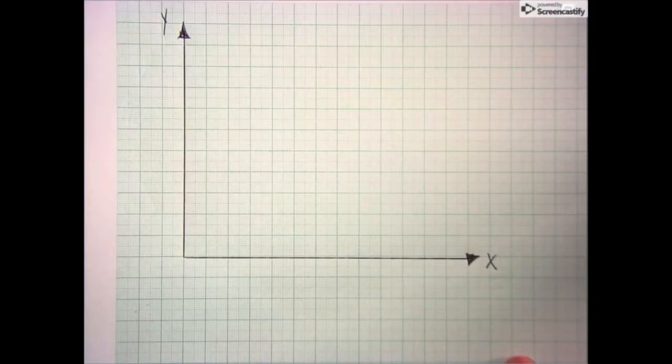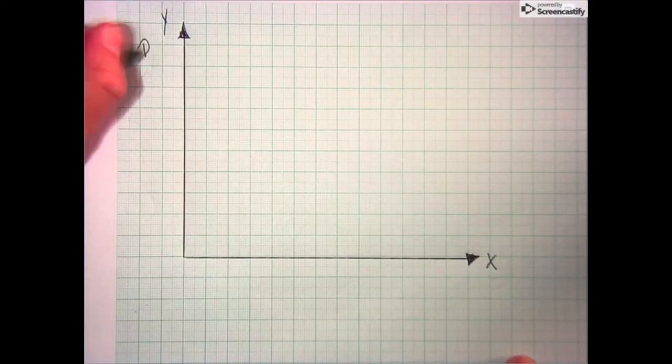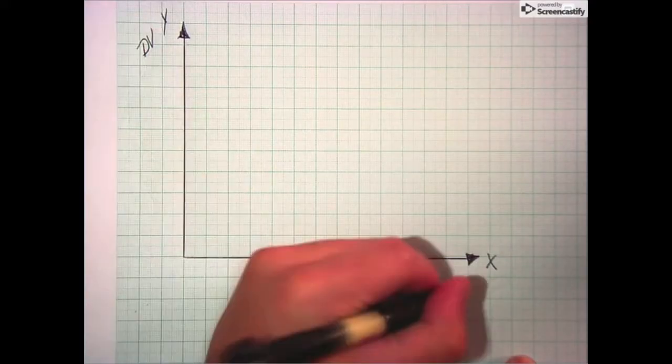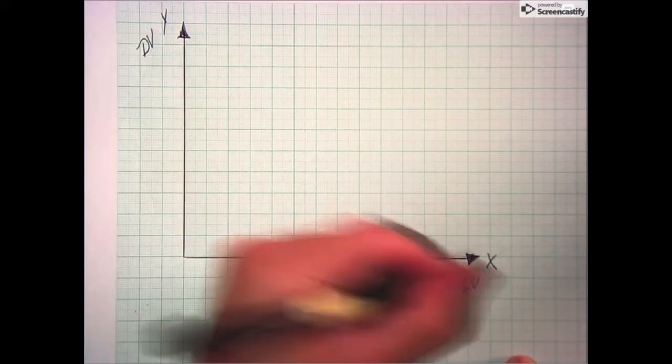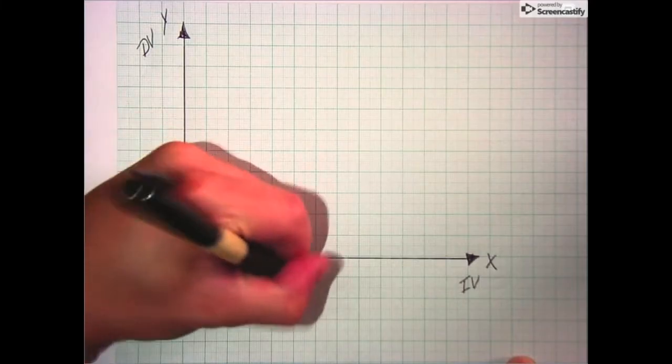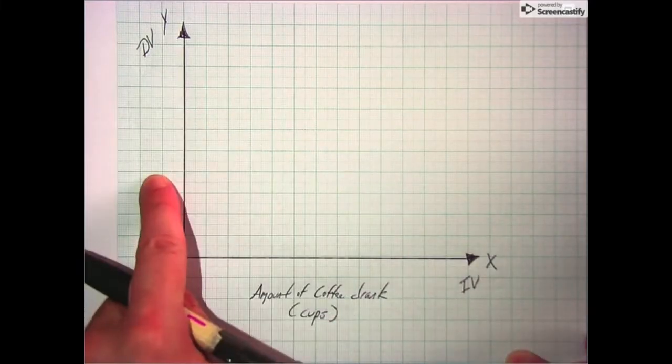Next, we need to figure out where our independent and dependent variables go on this graph. Here's the general rule. The dependent variable goes on the side here, the y-axis. And what we changed, the independent variable goes down here on the x-axis. Don't forget to include the units for each and title your graph.